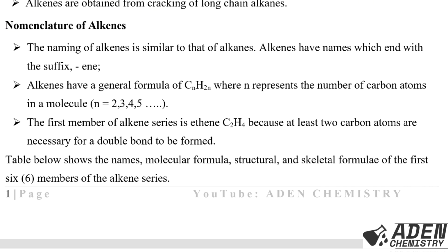The naming of alkenes is similar to that of alkanes. Alkenes have names which end with the suffix '-ene'. Alkenes have a general formula of CnH2n, where n represents the number of carbon atoms in a molecule.